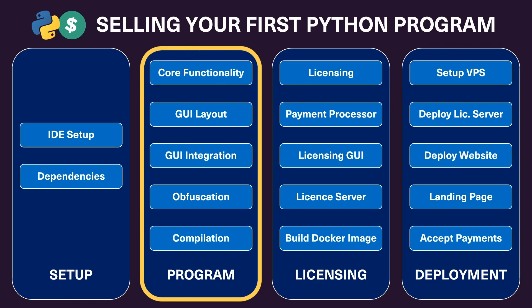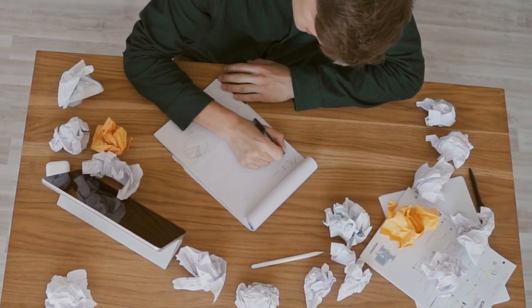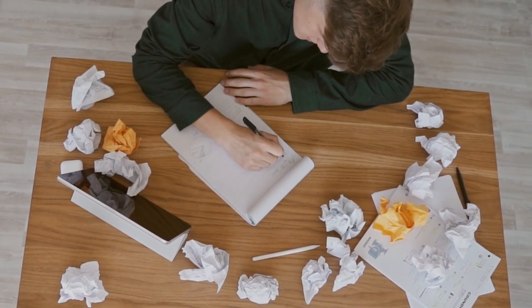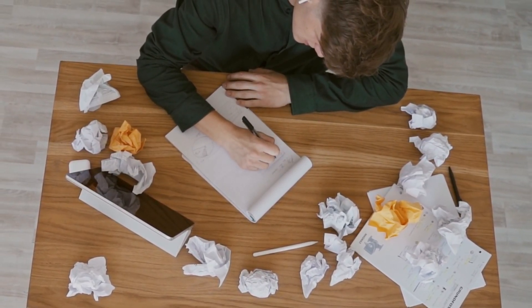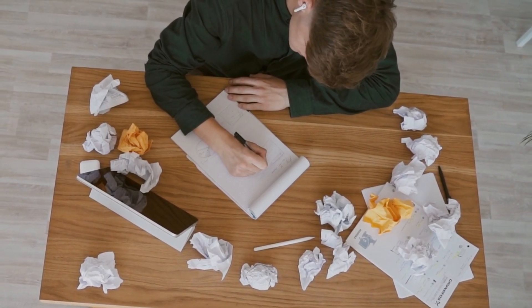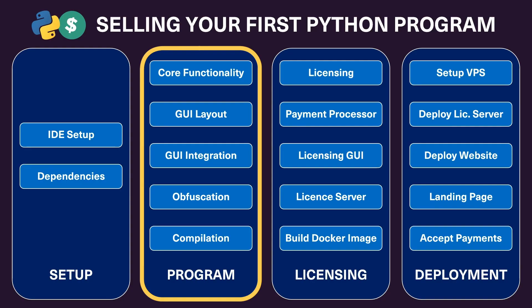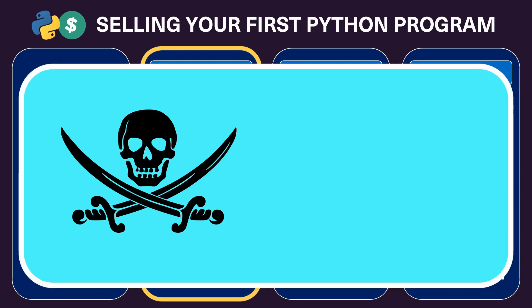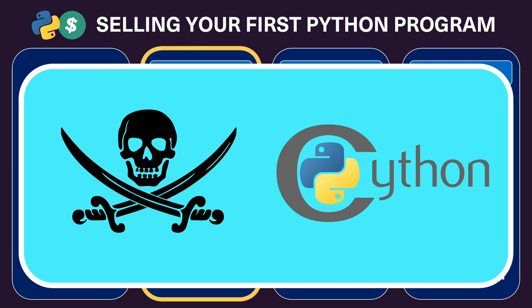Next we'll handle writing up the program itself. This series assumes that you have an idea in mind for something you want to release, however for the purposes of this series we'll be making a simple application that splits PDF files into individual pages. In this section we'll also cover some of the challenges associated with using Python, such as unwanted source code recovery and how we can mitigate their impact using techniques such as obfuscation.